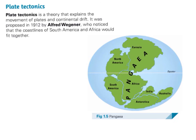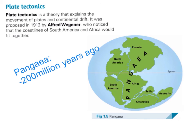Plate tectonics is a theory that explains the movement of plates and continental drift. It was proposed in 1912 by Alfred Wegener, who noticed that the coastlines of South America and Africa would fit together. Over 200 million years ago, all of the continents fitted together in one large continent called Pangaea. They slowly began to break apart and drift away from each other, and these continents are still moving today.